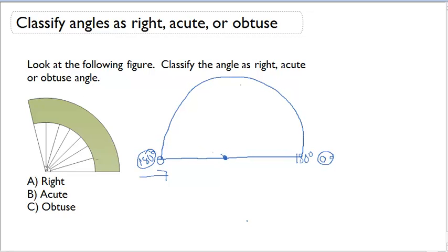Halfway from 0 to 180, either way, is a 90 degree angle. And that's a right angle. Right angles have to be exactly 90 degrees.